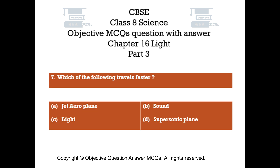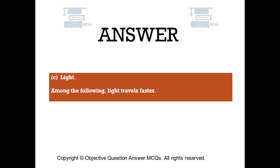Question number 7: Which of the following travels faster? Option A: Jet aeroplane, Option B: Sound, Option C: Light, Option D: Supersonic plane. The right answer is Option C: Light. Among the following, light travels faster.